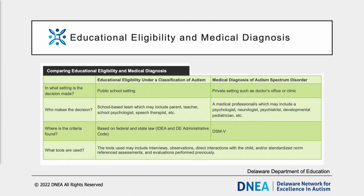Educational evaluations and medical evaluations are not the same. The purpose of an educational evaluation is to determine eligibility for special education services, while the purpose of a medical evaluation is to make a diagnosis. A medical diagnosis is not required prior to conducting an evaluation for special education services; however, if a student already has a medical diagnosis, the school must review any outside evaluations. It is possible that a child with a medical diagnosis of autism may not be eligible for special education under a classification of autism, and vice versa.